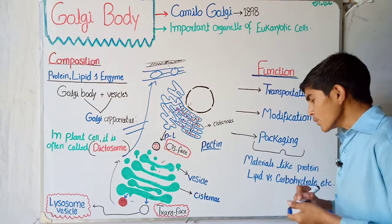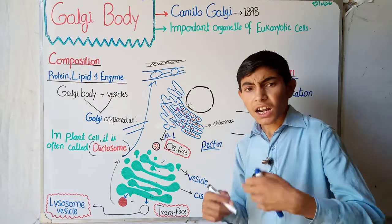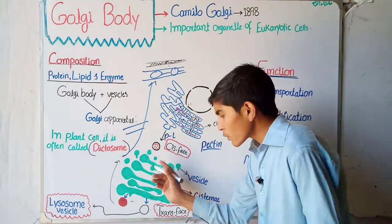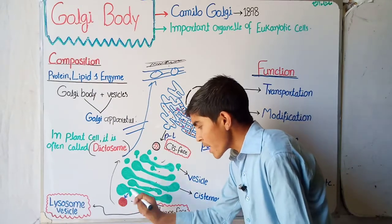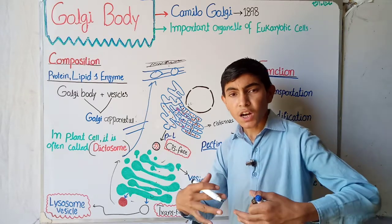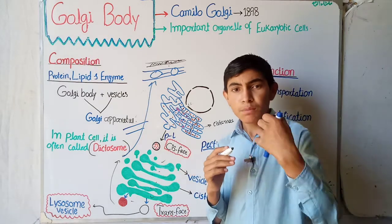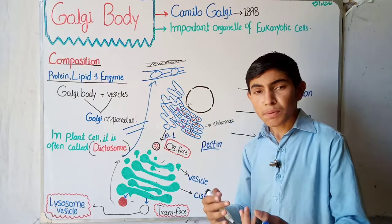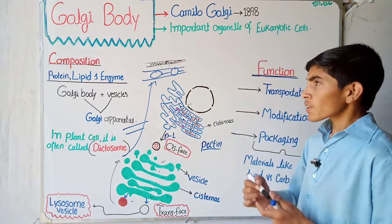Materials like protein, lipid, and carbohydrate are also part of the packaging function. The vesicle enters the Golgi apparatus, which packs and modifies them — for example, converting them into glycoprotein and glycolipid — and then packages them for transport.